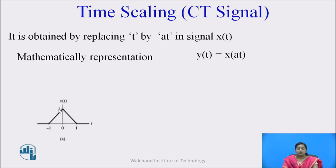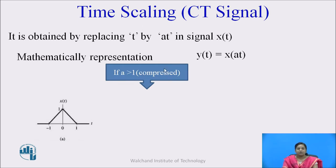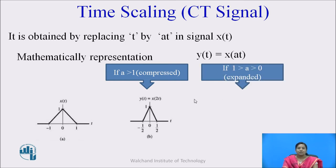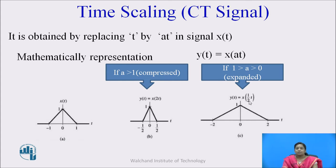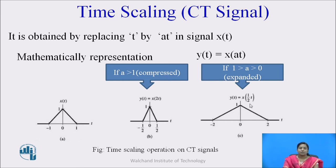Suppose x(t) is the input signal. If you apply the time scaling property and α is greater than 1, it leads to compression of the signal. For example, y(t) = x(2t) leads to compression by a factor of 2. If α is less than 1, it leads to expansion of the signal — x(t/2) leads to expansion by a factor of 2.